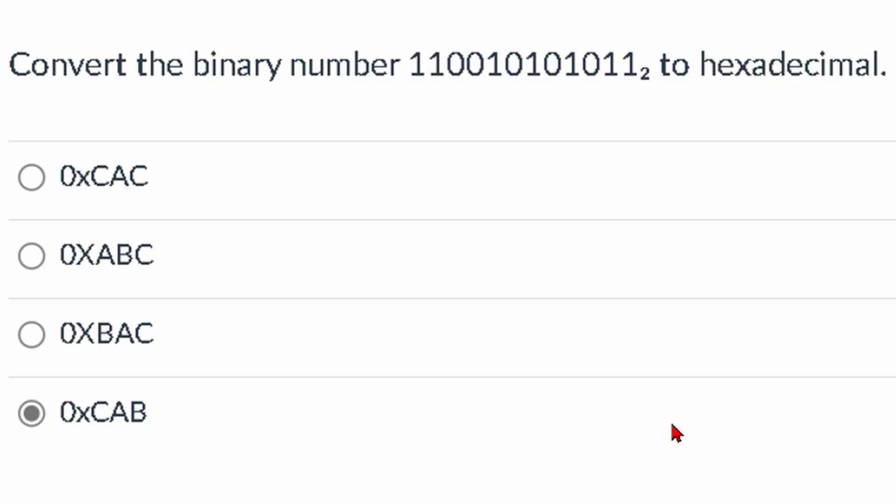We're going to convert the binary number to hexadecimal. Previously, in the playlist linked below the like button, we did an example where we had 8 bits. This one is where we have 12.